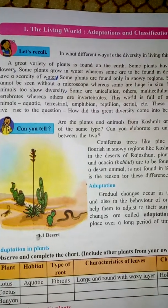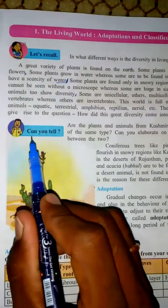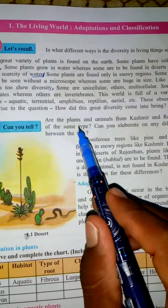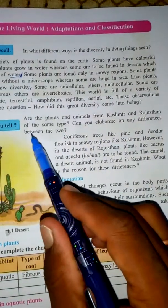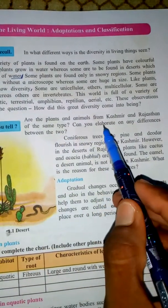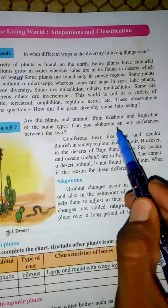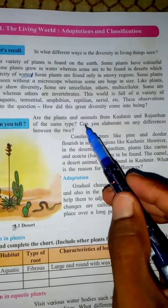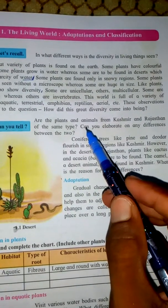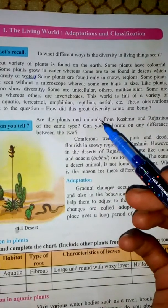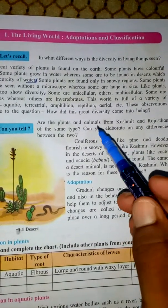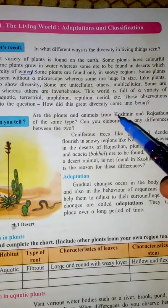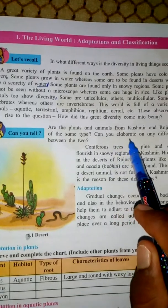Welcome students. This is Science class 7. The next topic is: can you tell — listen carefully — are the plants and animals from Kashmir and Rajasthan of the same types? Can you elaborate on the differences between the two? There are different types of plants and animals in Kashmir and Rajasthan.